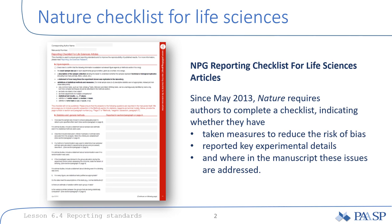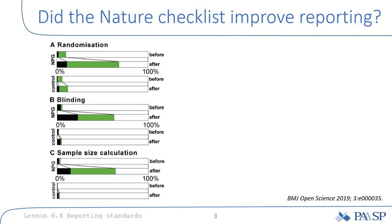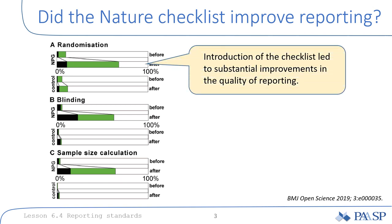One important question, however, is whether or not these guidelines indeed make a difference when it comes to the quality of reporting. The short answer is yes, at least partially. This is a comparison of journals from the Nature Publishing Group and controlled journals from other publishing houses without any reporting checklists. As you can see for selected items like randomization, blinding and sample size calculation, there is certainly a significant increase in discussing these items in published articles after the Nature Checklist was introduced.